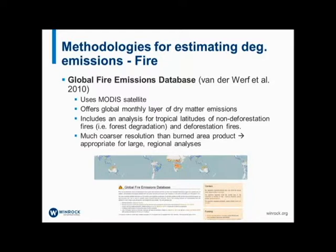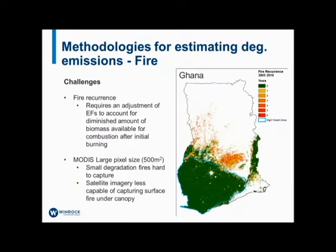The MODIS active fire product is also available, but it captures only where fire hotspots exist, so it's not effectively able to capture where forest degradation activity has been happening. There's also the Global Fire Emissions Database, developed by Vanderwerf in 2010 and available online, which offers global monthly data and quantifies dry matter emissions using the MODIS burn area product. It includes analysis for tropical latitudes of both deforestation and non-deforestation fires — including forest degradation fires — and can be useful for large regional analyses, though at a much coarser resolution.